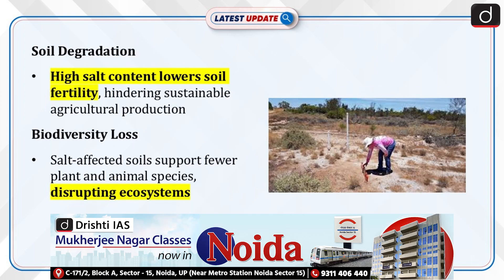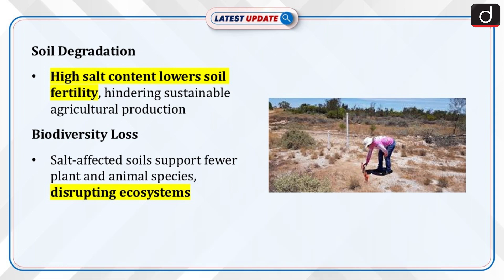Soil degradation: high salt content causes reduced soil fertility, making it difficult to sustain long-term agricultural production. Reduced biodiversity: salt-affected soils often support fewer plant and animal species, disrupting the natural ecosystem.